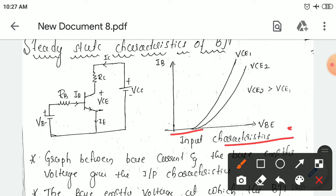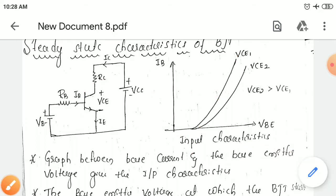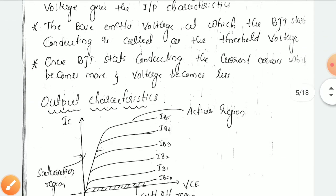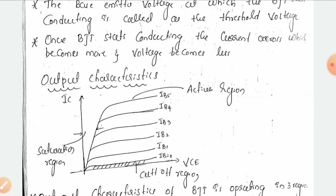Once the base emitter voltage is sufficient to drive this particular BJT, then the current starts increasing linearly. That point is called as threshold point and the voltage at that particular point is called as threshold voltage. This is the variation of base current with respect to the base emitter voltage — that is the steady state characteristics or input characteristics of the bipolar junction transistor.